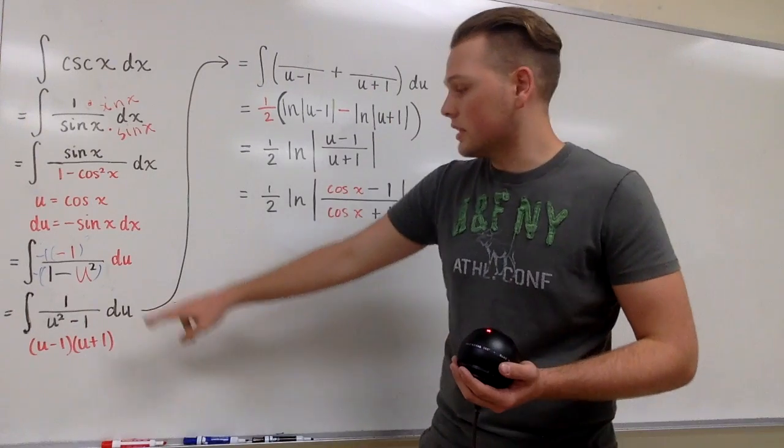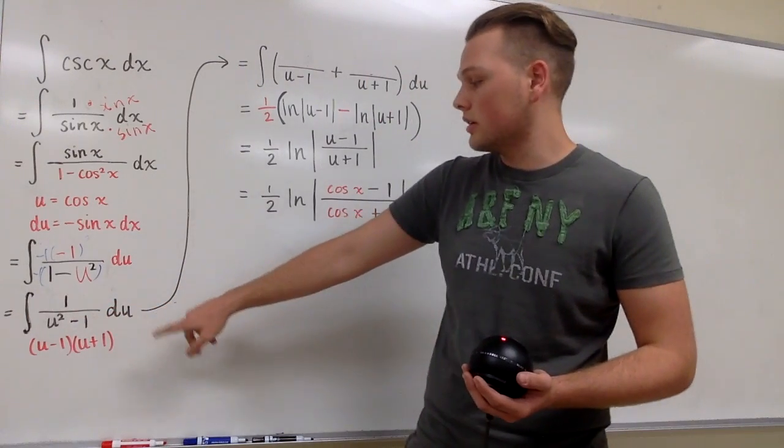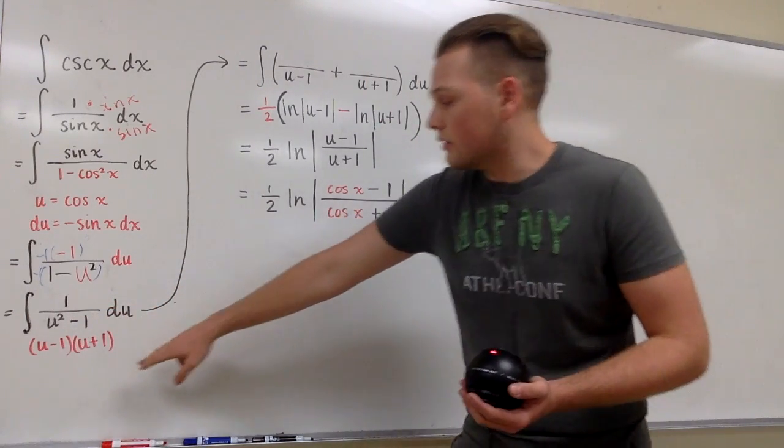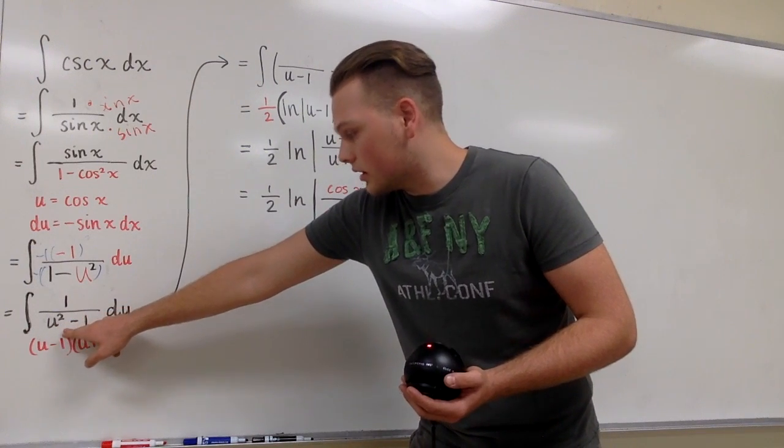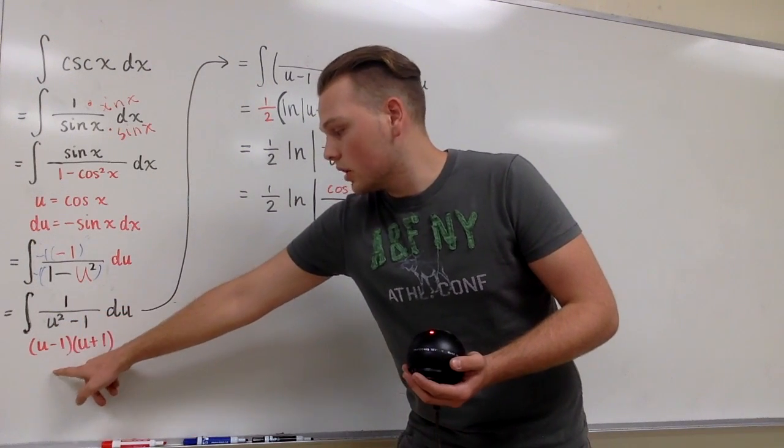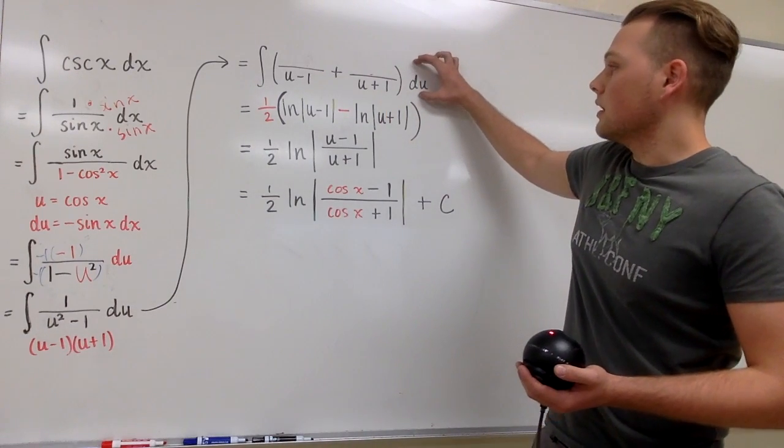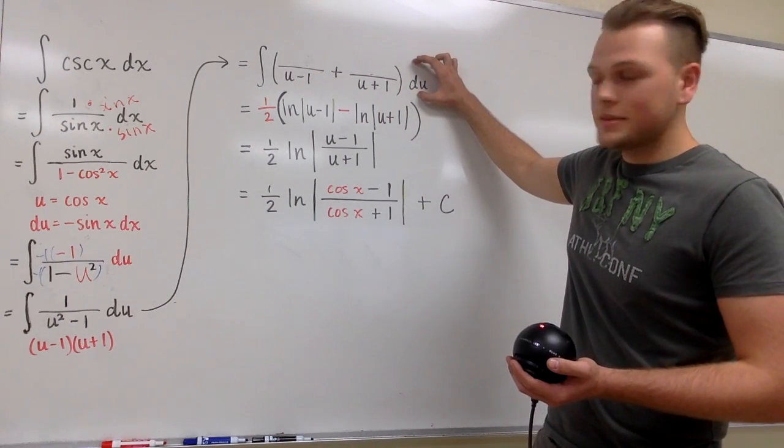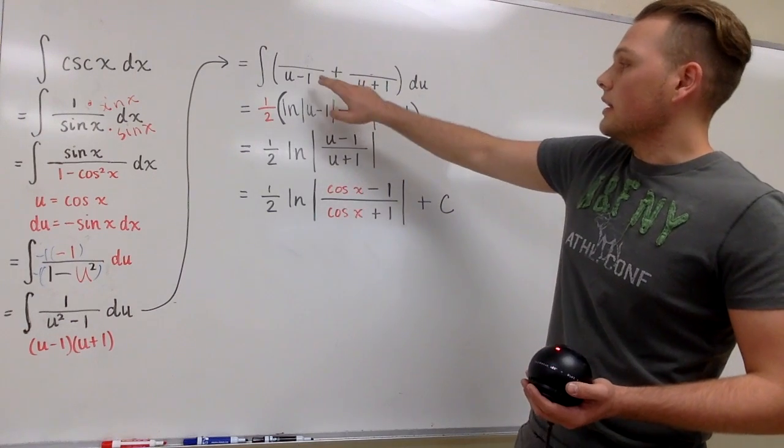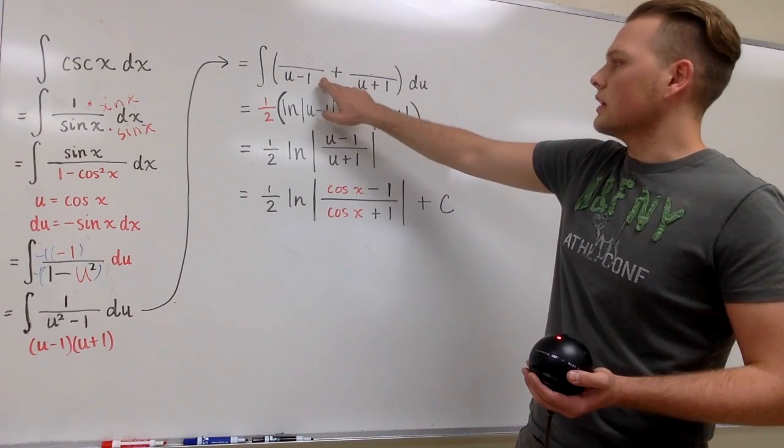So now we're left with the integral of 1 over u squared minus 1 times du, and we're going to factor out the denominator of this fraction as u minus 1 times u plus 1. Now we're going to call upon the infamous partial fraction decomposition and use the cover-up method.